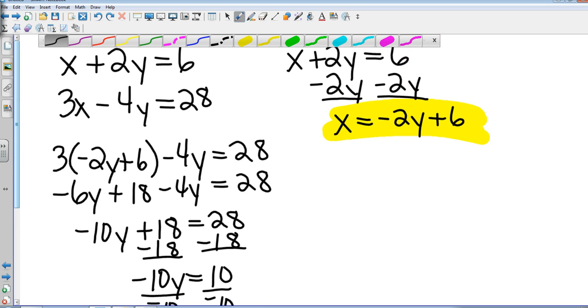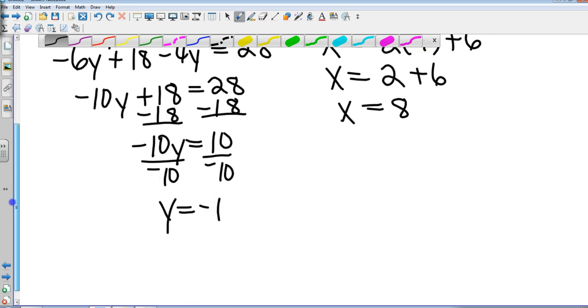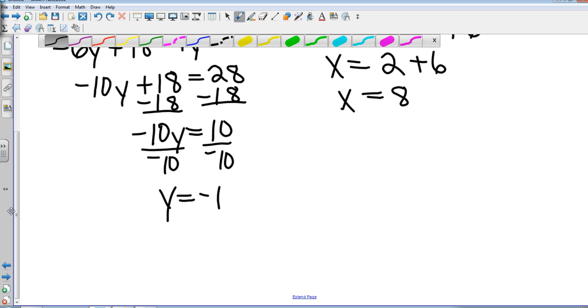Divide by negative 10, y equals negative 1. And so now I'll go up here, substitute in the y. Negative 2 times negative 1 is positive 2 plus 6. So that gives me an x value of 8. So my solution is 8, negative 1.